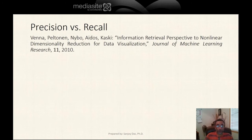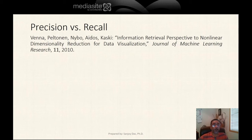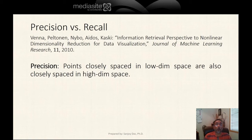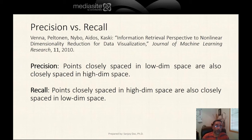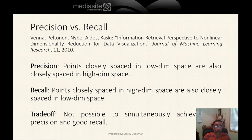Two issues we will deal with in manifold learning are precision and recall, proposed in a recent paper. Precision means points closely spaced in low dimensional space are also closely spaced in high dimensional space — the low dimensional space is the output of the manifold learning algorithm, and the high dimensional space is the original space. Recall is the opposite: points closely spaced in high dimensional space are also closely spaced in low dimensional space. It's probably not possible to simultaneously achieve good precision and good recall.